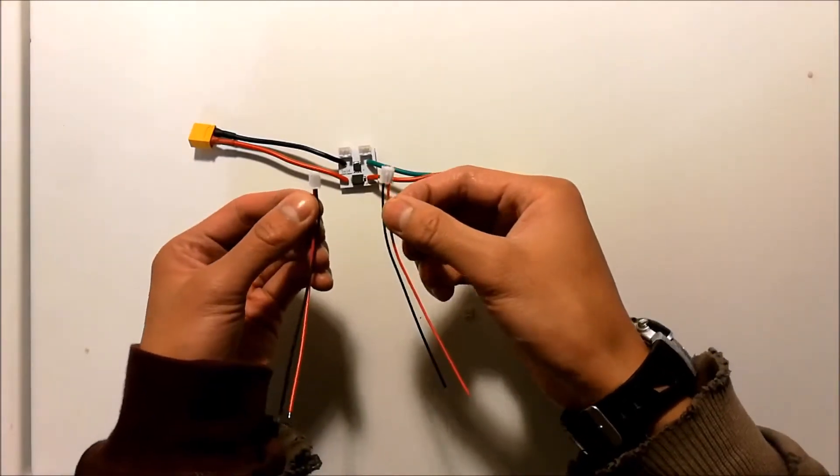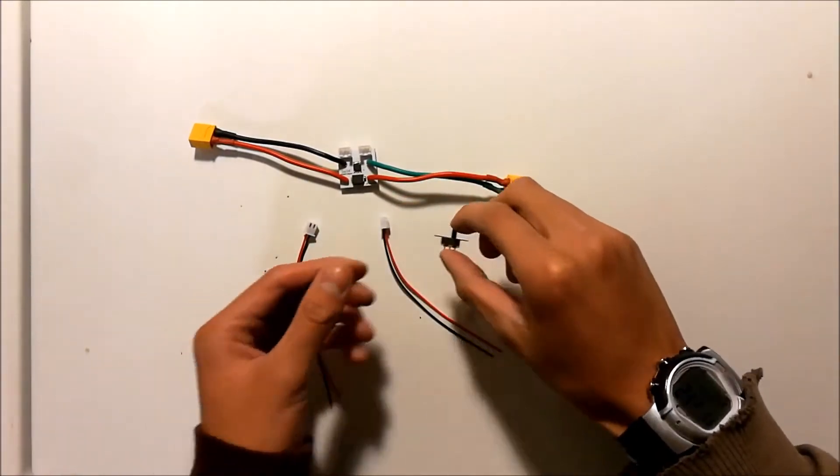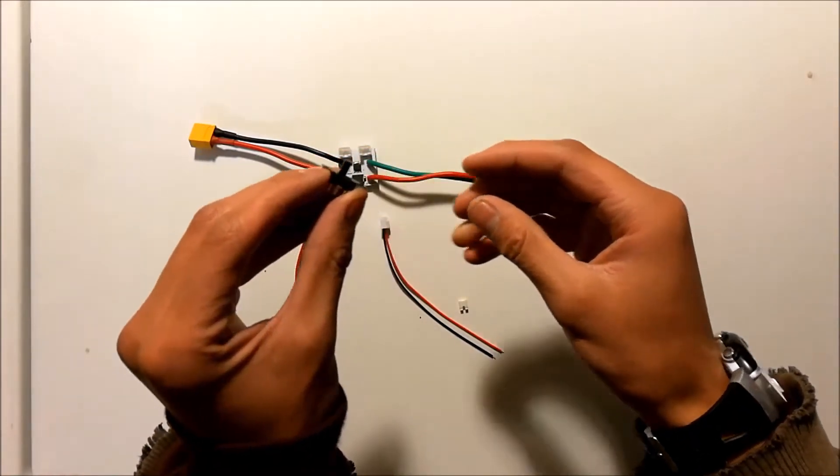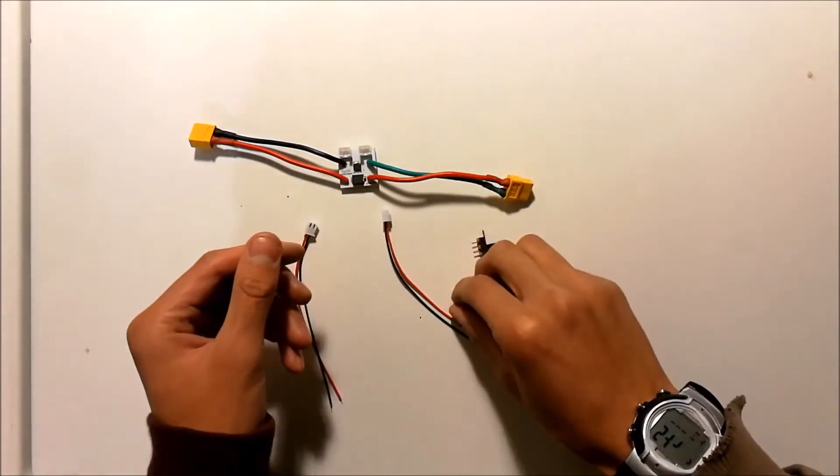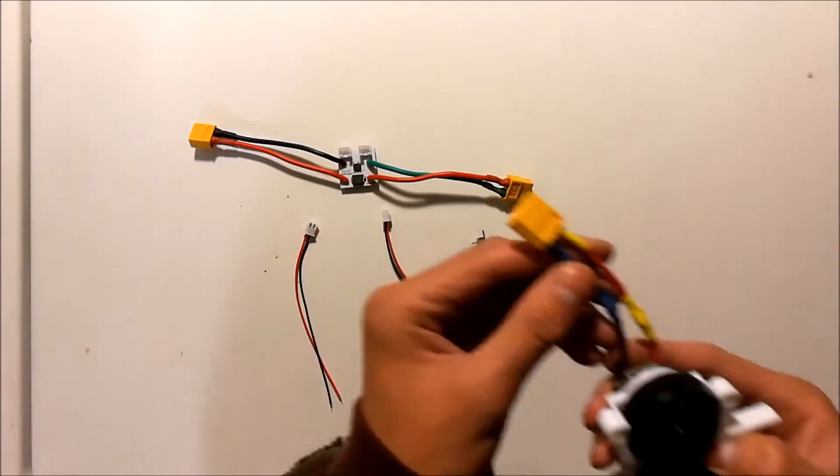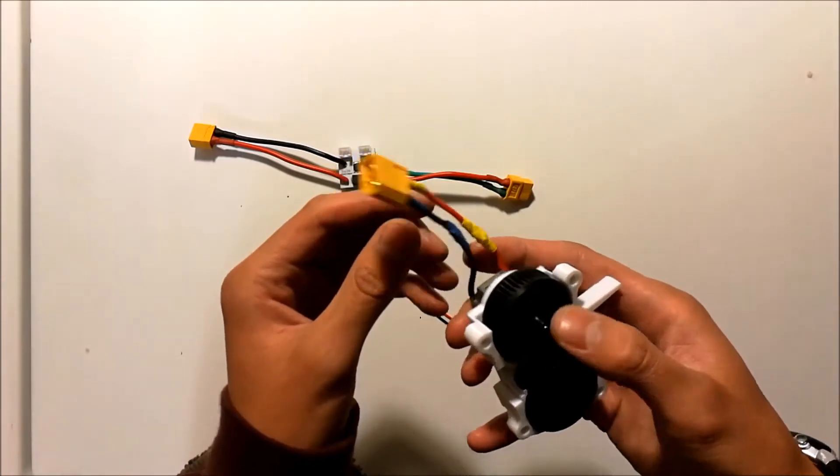You get two JST connectors, a slider switch. A rocker switch can be used, but it's not included. A jumper cap, and an XT60 connector, a male one, which you'll need to connect to your motors.